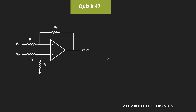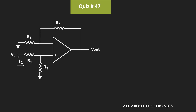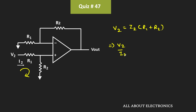Similarly, let us find the input impedance seen by looking into voltage source V2. For that, we consider source V1 as 0. Let the current supplied by V2 be I2. Since the op-amp is ideal, no current flows into the op-amp terminals, so I2 flows through both R1 and R2. Applying KVL in this loop, V2 equals I2 times (R1 plus R2), and therefore the input impedance V2 divided by I2 equals R1 plus R2.